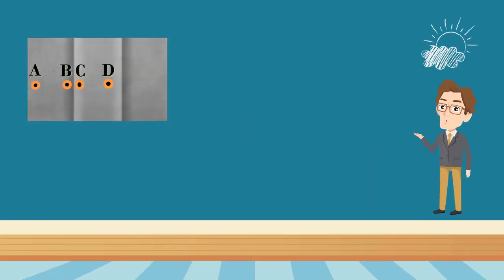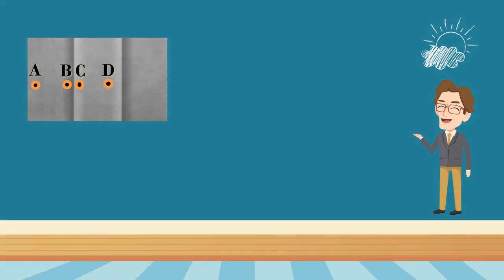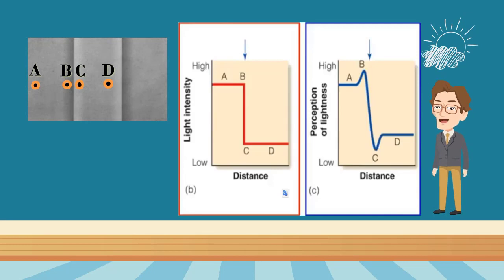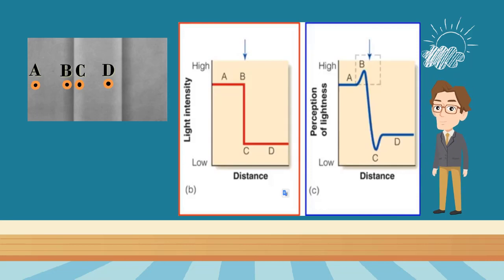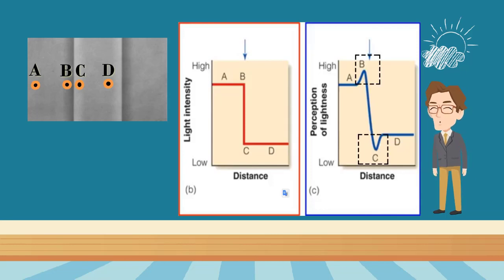Let's mark four points on this picture: A, B, C, D. From a physical point of view, the brightness of point A and point B is the same, and the brightness of point C and point D is the same. But from a perception point of view, the position of point B is darker than that of point A, and the position of point C is brighter than that of point D. Actually, this is an illusion.